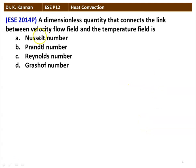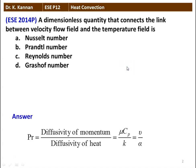The first question: the dimensionless quantity that connects the link between velocity flow field and temperature field is — Nusselt number, Prandtl number, Reynolds number, or Grashof number. The correct answer is Prandtl number, which is diffusivity of momentum divided by diffusivity of heat: mu*Cp/K, also equal to nu/alpha.